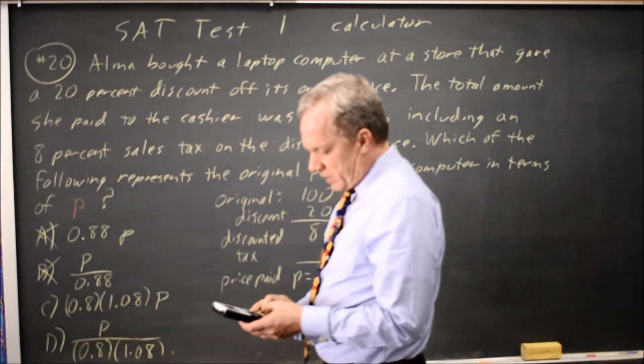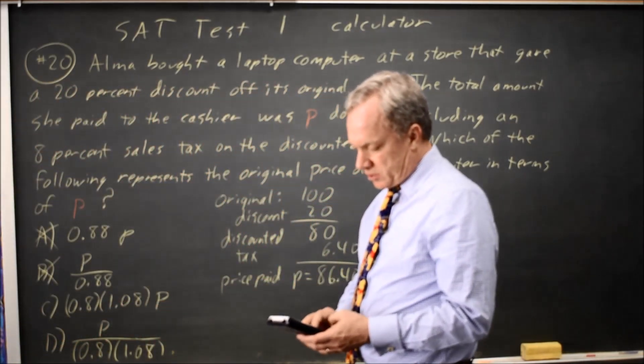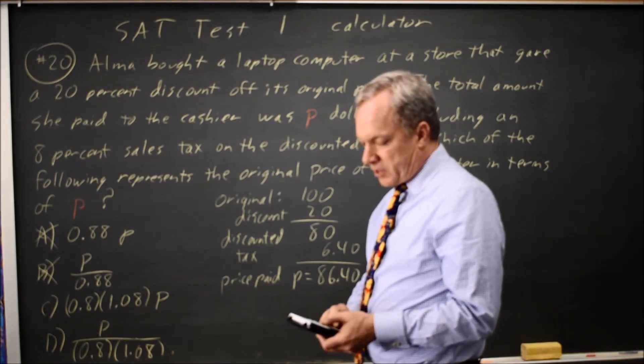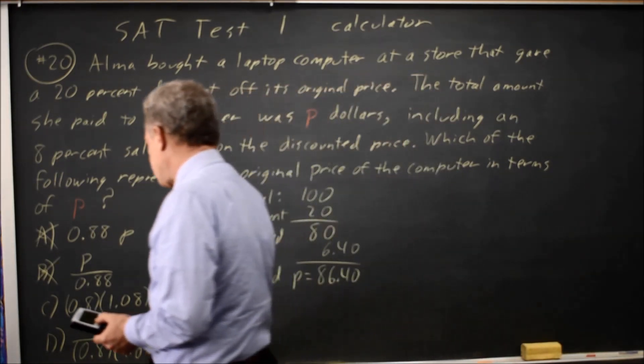What about .8 times 1.08 times 86.40? And that's $74, which is not right.